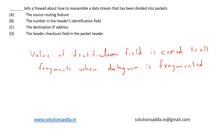In other words, all fragments have the same identification number as the original datagram. This identification number helps the destination in reassembling the datagram — it knows that all fragments with the same identification number must be assembled into one single datagram. So the number in the header's identification field tells a firewall how to reassemble a data stream divided into packets. Option B is the correct answer.